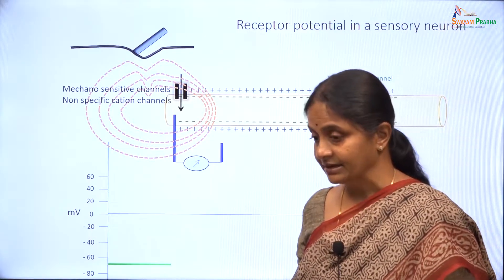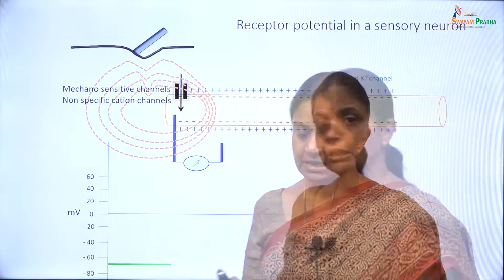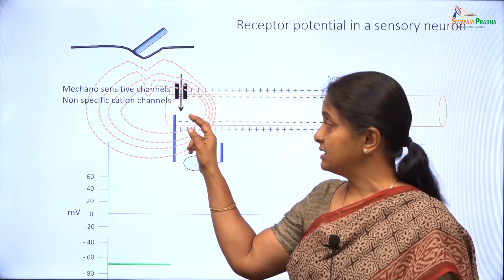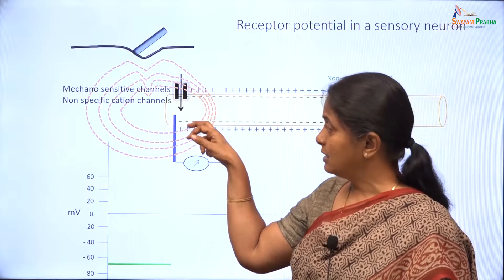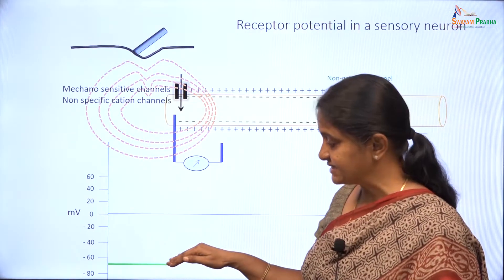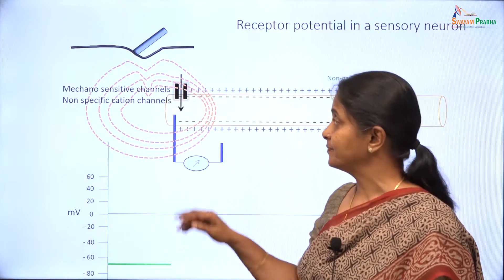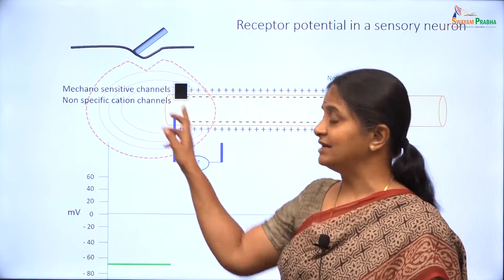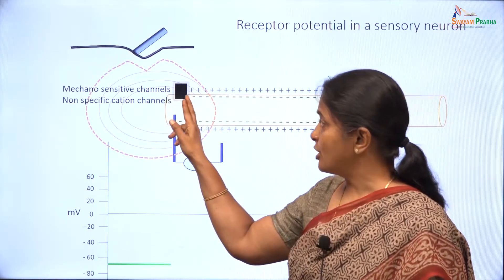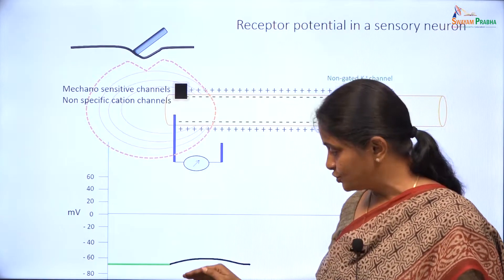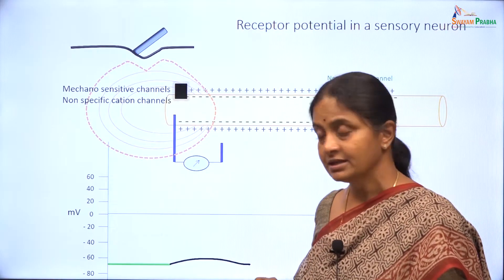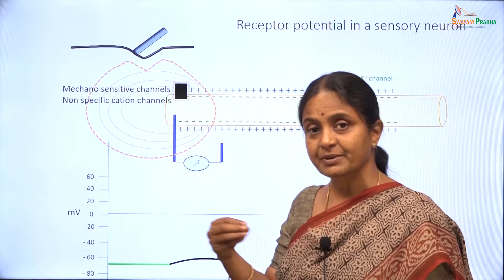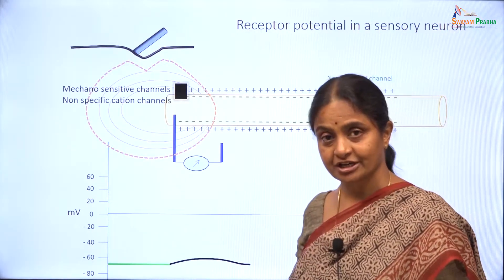These mechanosensitive channels are non-specific cation channels. Opening of the mechanosensitive channels will cause an inward current and that will slightly depolarize the membrane. The inside will become less negative — a little less negative, though it will not approach positivity. These channels close soon after they open because the lamellae readjust themselves, and because they open and close for a brief period, they produce a very transient depolarization. That is why these types of channels — there are many of them in different sensory receptors — are called TRP channels, for transient receptor potential channels.